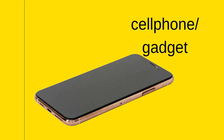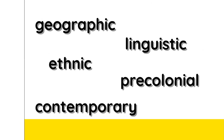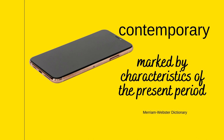This one is very easy — pause the video and interact with me. Which of these five words is cell phone or gadget related to — geographic, linguistic, ethnic, pre-colonial, or contemporary? It is related to contemporary. Contemporary means marked by characteristics of the present period.